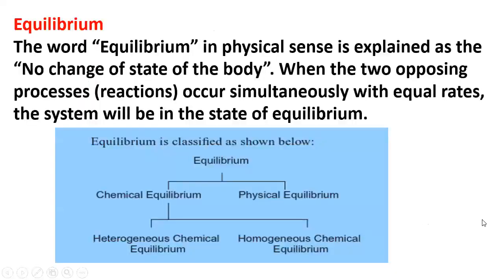Let's look at what equilibrium means. The word equilibrium in physical sense is explained as no change of state of a body when all the forces acting on it are equal — that body will be in a state of equilibrium, meaning it would not move; it's going to be in a fixed position. When two opposing processes or reactions occur simultaneously with equal rates, the system will be in a state of equilibrium. Equilibrium is classified into two types.